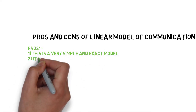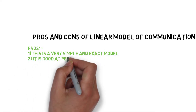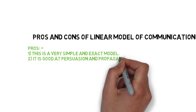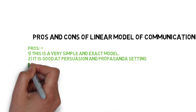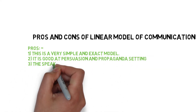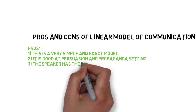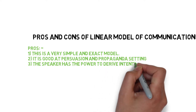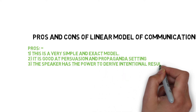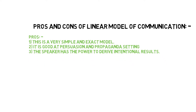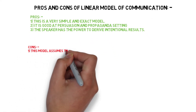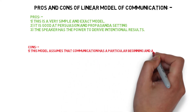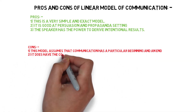Pros and cons of the linear model of communication. Pros: one, this is a very simple and exact model; two, it is good at persuasion and propaganda settings; three, the speaker has the power to derive intentional results.